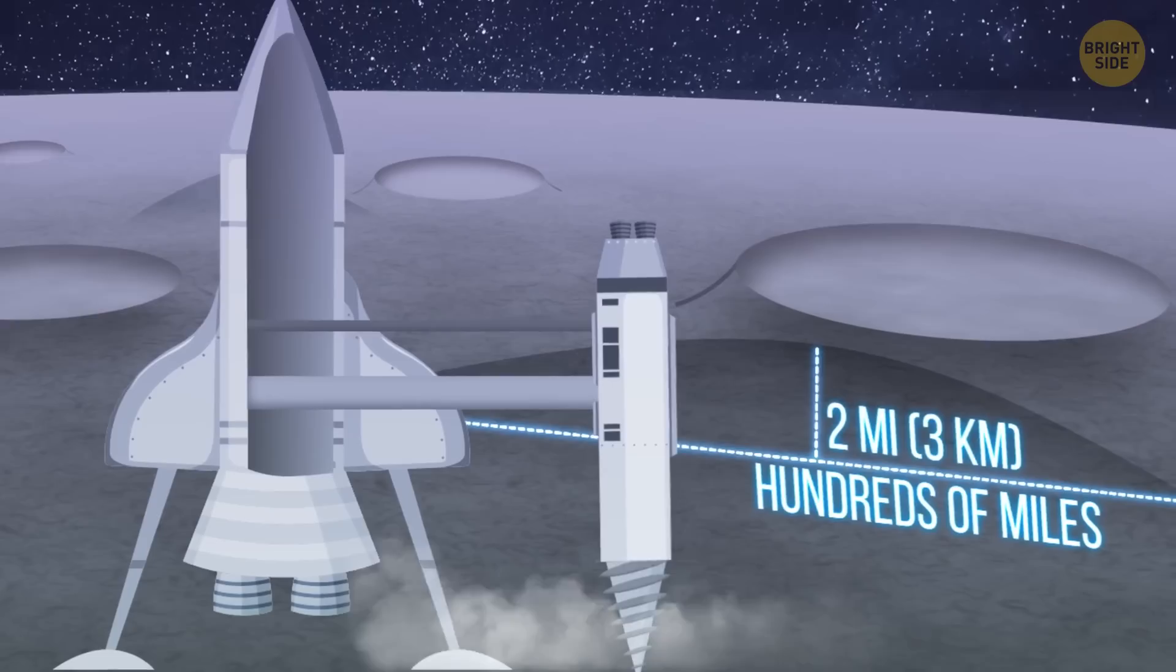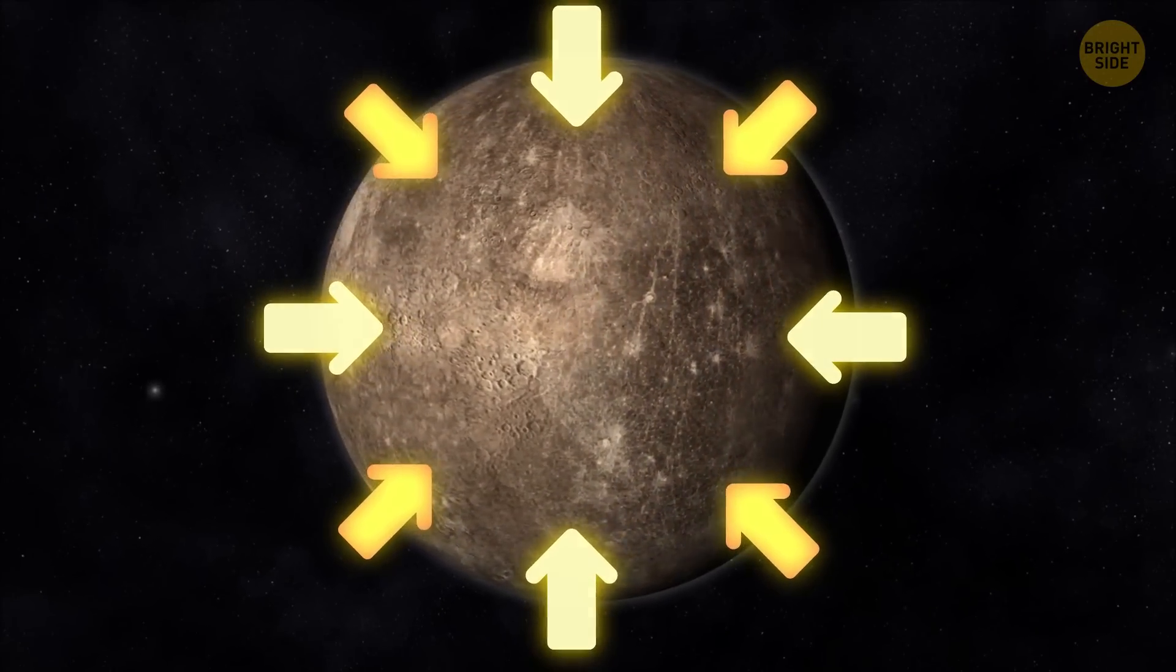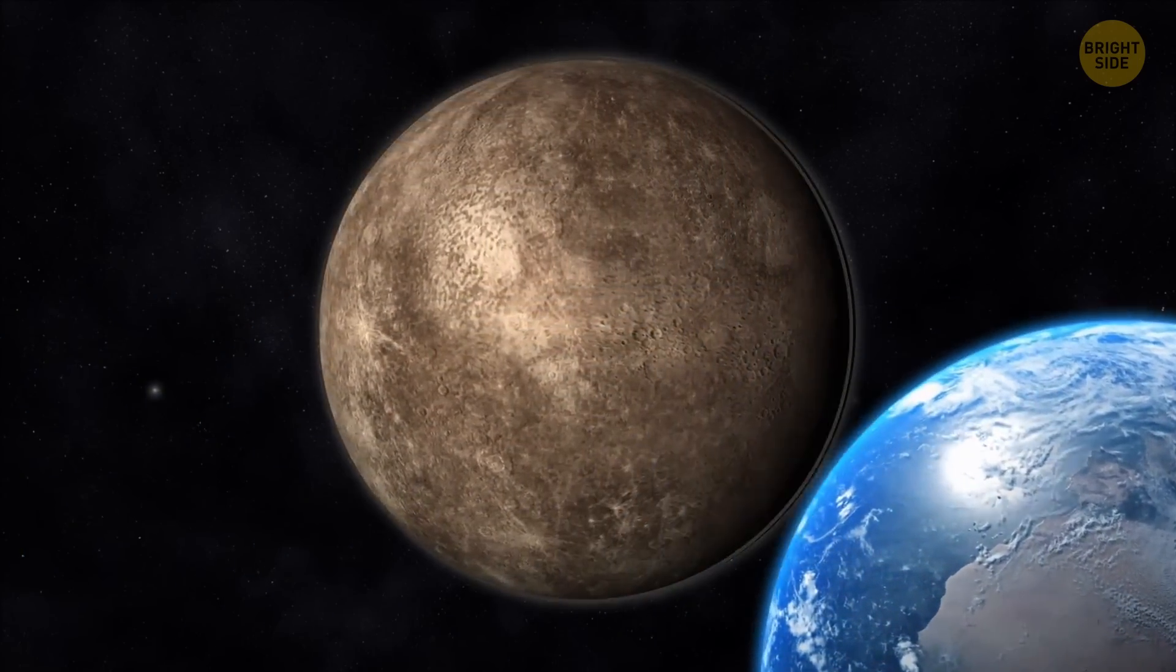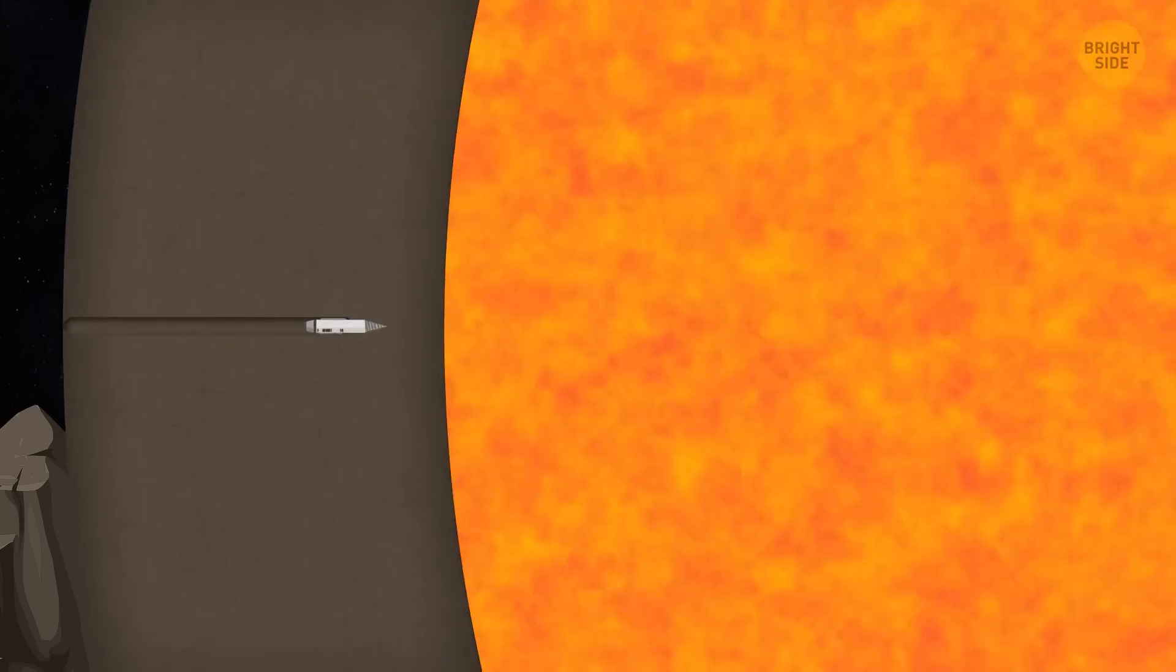You start drilling and immediately understand it's going to be tough. Mercury is the second densest planet in the solar system, topped only by Earth. The planet's outer shell is 250 miles of solid crust and rocky mantle. After getting through it,